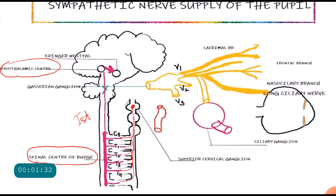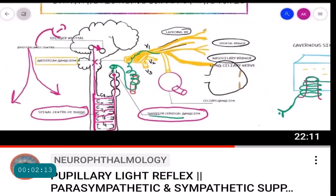The neurons traveling from the ciliospinal center of Budge to the superior cervical ganglion are called the second order neurons. From the superior cervical ganglion, the postganglionic neurons pass through the cavernous sinus and then into the V1 division of the trigeminal ganglion. Through the ophthalmic division they travel to the nasociliary branch and further into the long ciliary nerves, which supply the dilator pupillae as well as the superior tarsal muscle. This basic anatomy is very important, and for revision I recommend my video on pupillary light reflex.